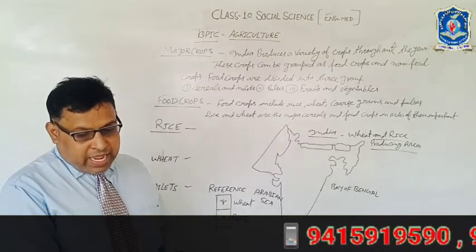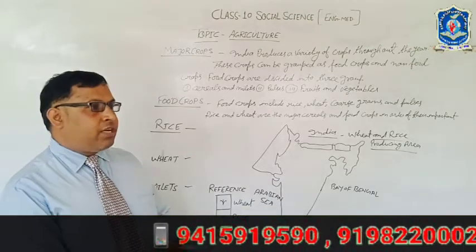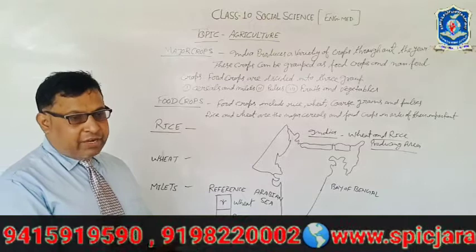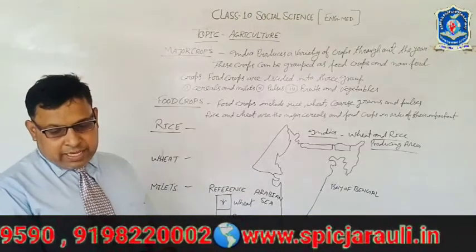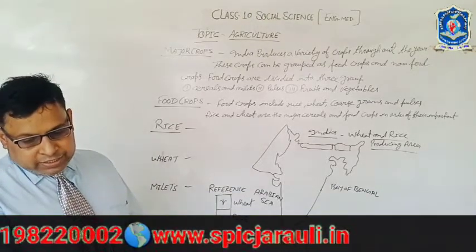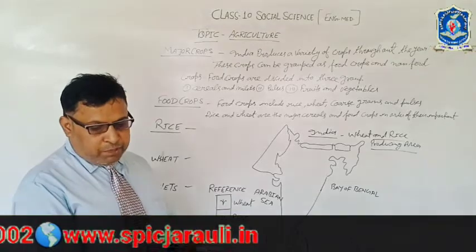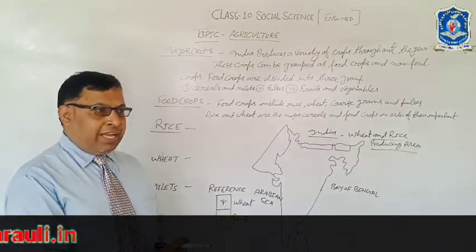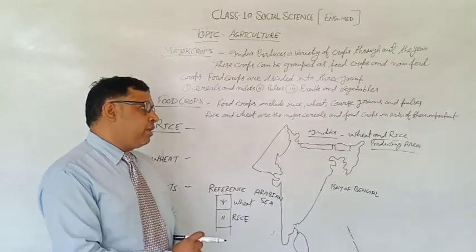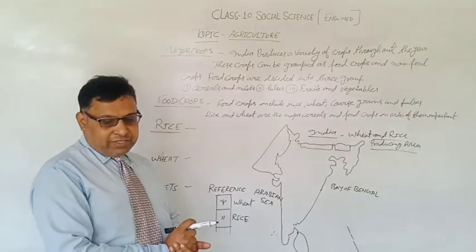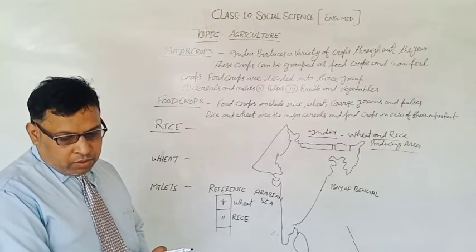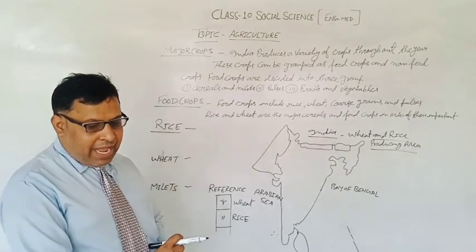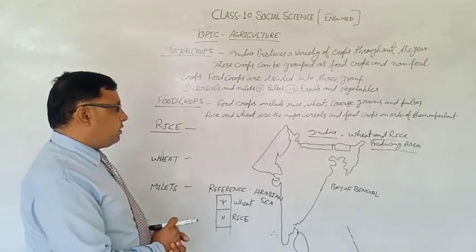कटाई के समय तापमान 20°C से 25°C होना चाहिए। गेहूँ के लिए तेज़ धूप की आवश्यकता होती है। इसके लिए जलोढ़ दोमट मिट्टी उपयुक्त होती है। उर्वरक का प्रयोग भी आवश्यक है।